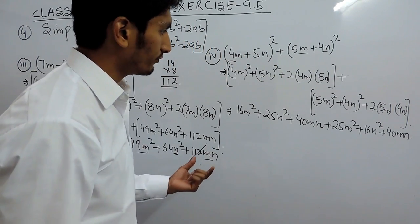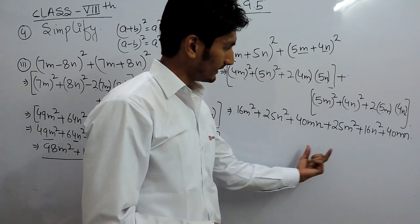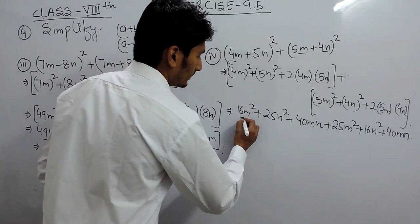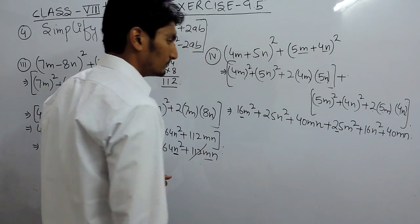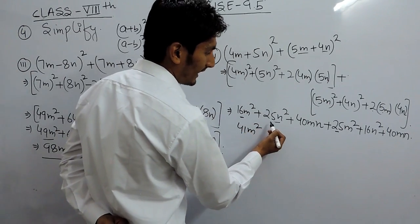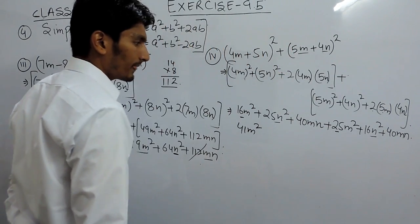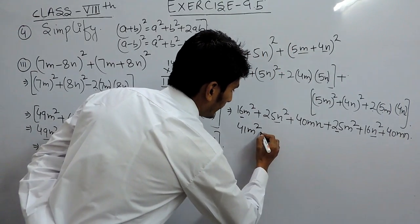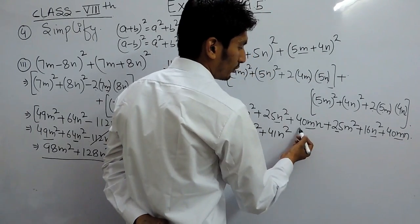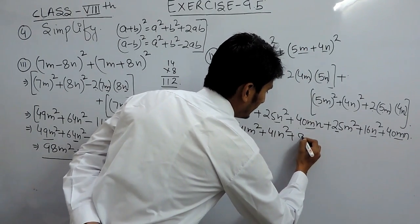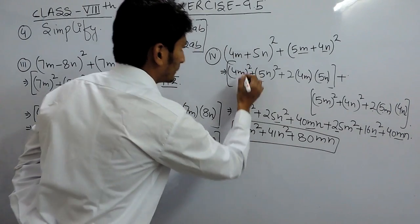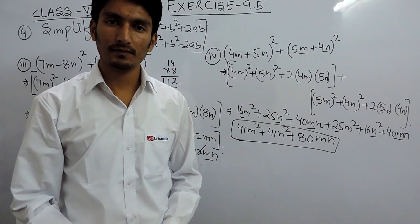Now we identify and combine like terms. The m² terms: 16m² + 25m² = 41m². The n² terms: 25n² + 16n² = 41n². The mn terms: 40mn + 40mn = 80mn. So the final answer for this expression is 41m² + 41n² + 80mn. This is how you can solve these questions. Thank you.